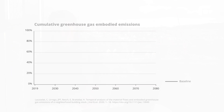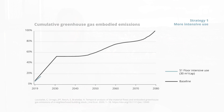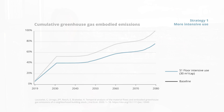Let me show you the first results for more intensive use. If you apply this first strategy, in practice it means that you lower the floor area per dwelling or per person. What you can see here is that you reduce the peak of construction. But because you only take a measure in the construction phase, you don't see any further decrease.